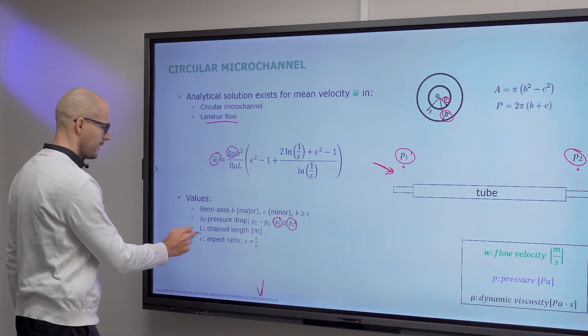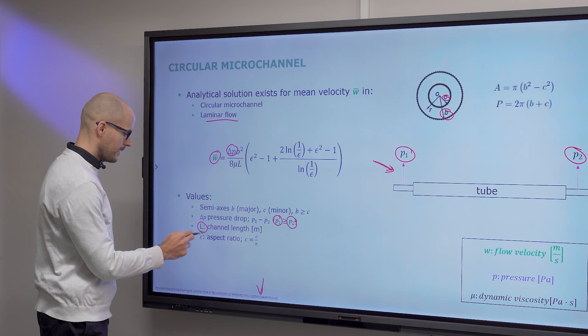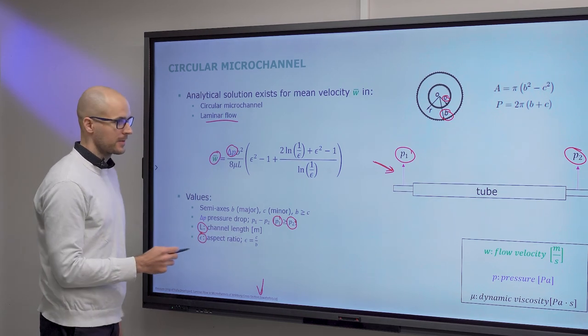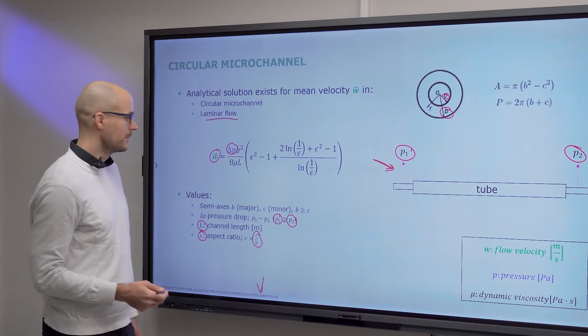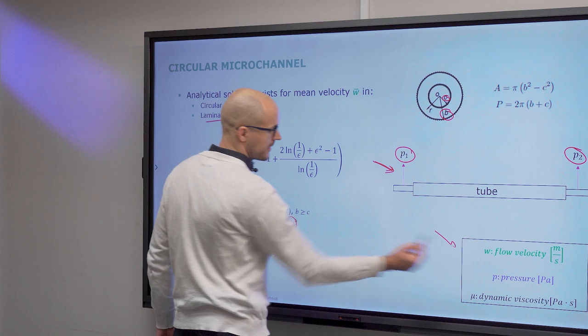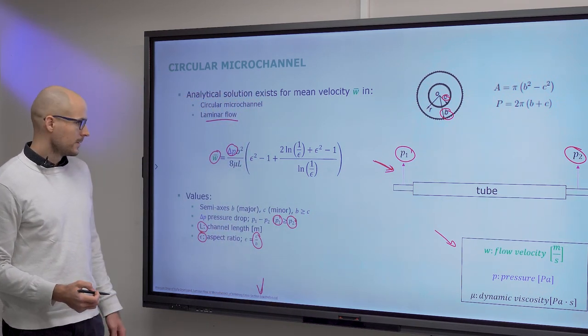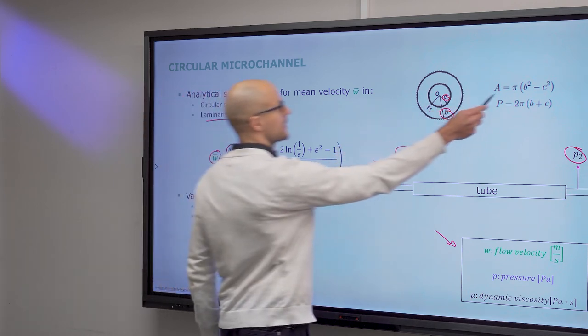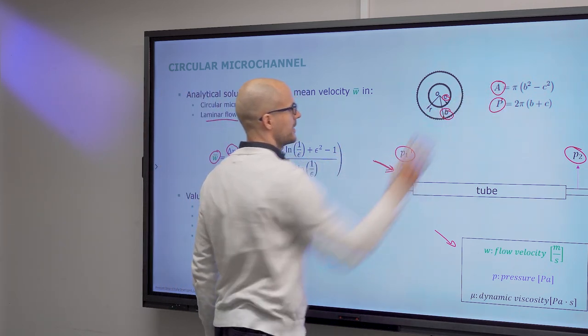And L is, remember, the channel length. And Epsilon is the aspect ratio, which is this fraction of the two semi-axes. And a reminder about the other quantities is down here. So cross-section you can calculate as such. And perimeter is such.